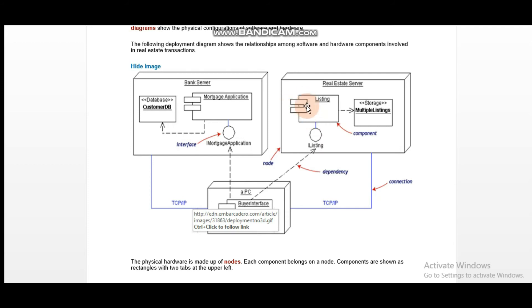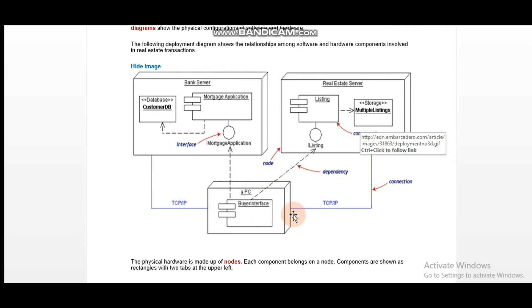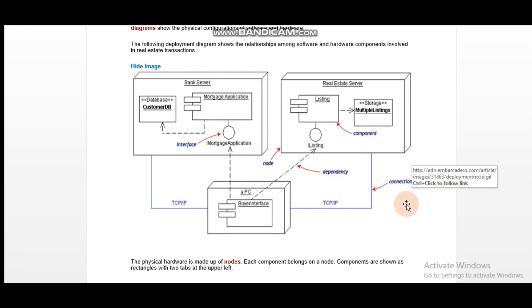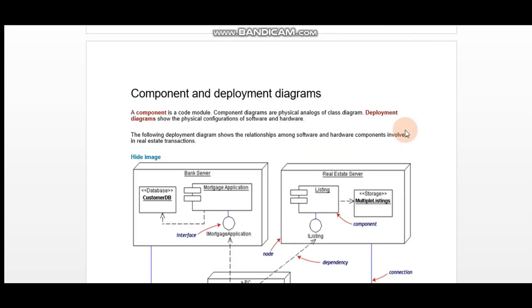These components belong to one node. Furthermore, there is an interface — you can see this shape, it is called interface. The dotted arrow line we call dependency. The straight line between two nodes we call connection. So the straight line is connection and the dotted arrow line is dependency.